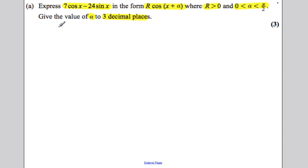Very straightforward, 3 marks. Write down what you are trying to express. You are trying to express 7 cos subtract 24 sin x and you are trying to express it in the form r cos x plus alpha.